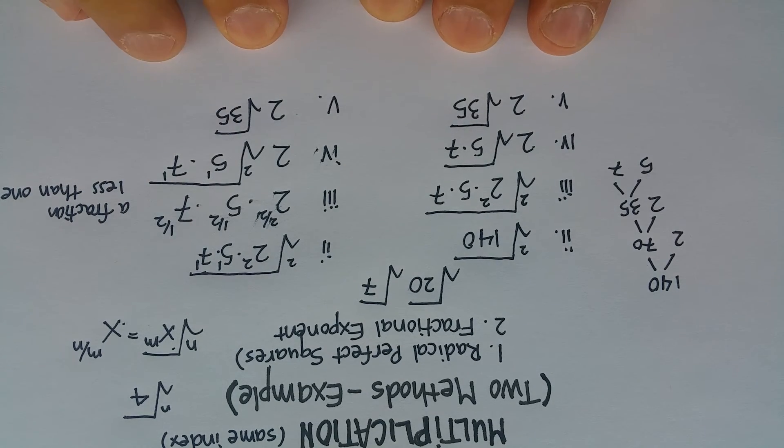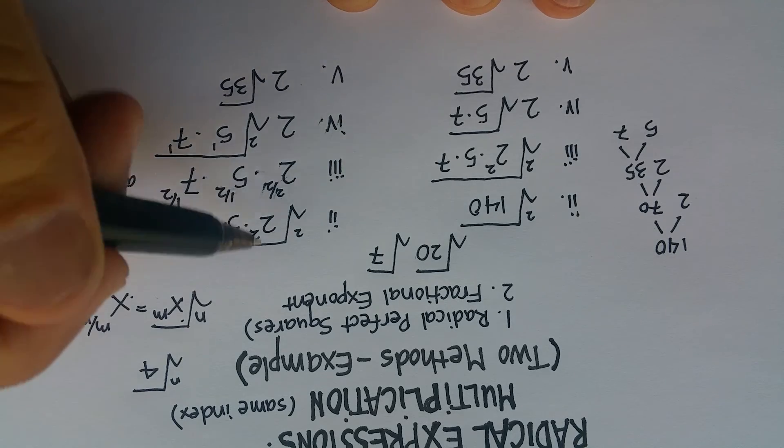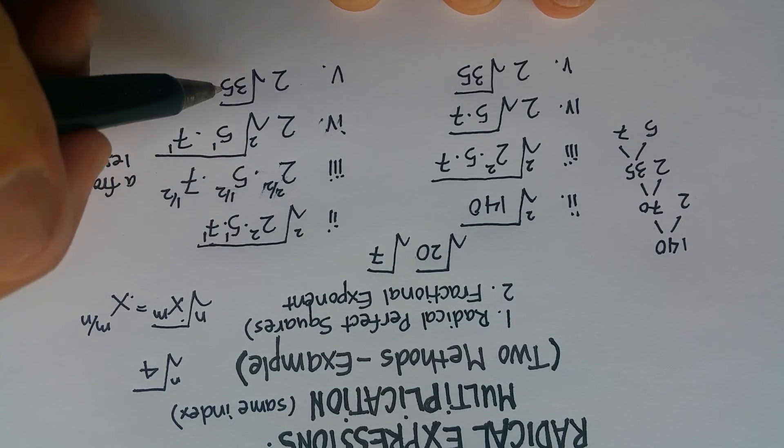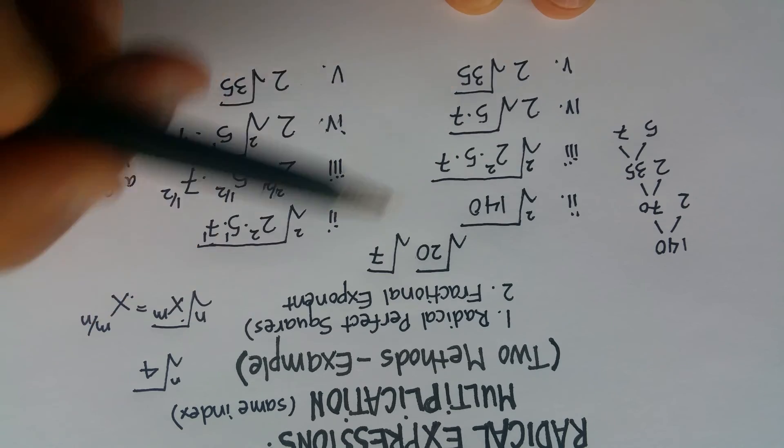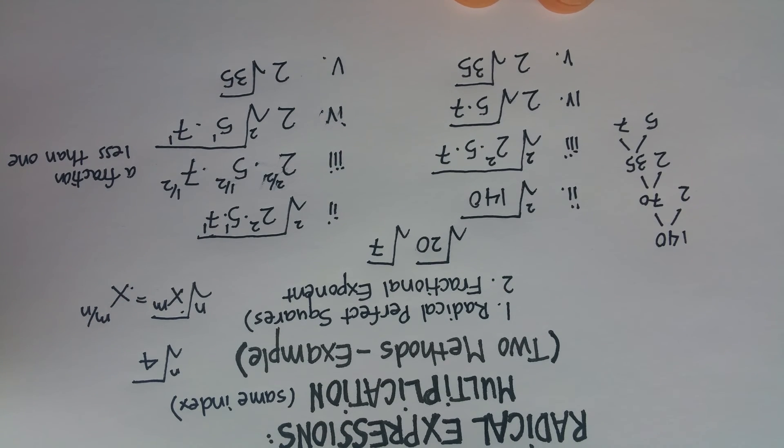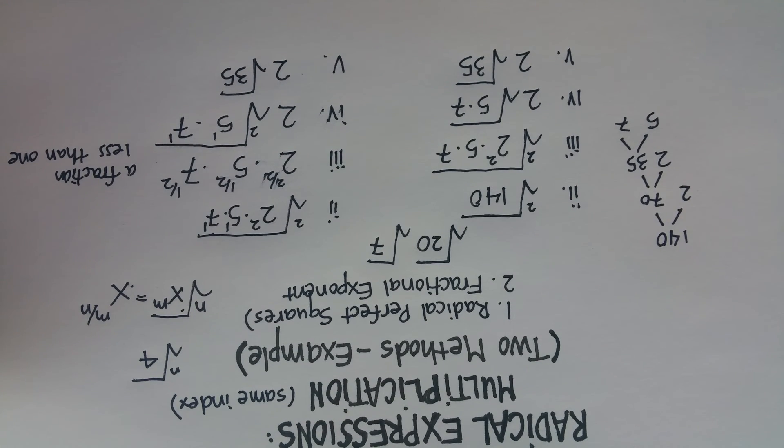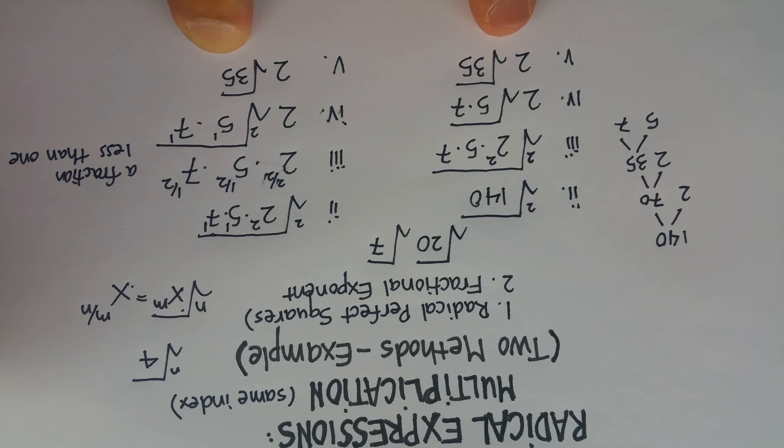So just two different methods to actually solve the same thing. Sometimes this fractional exponent method is easier. Sometimes these perfect square ones are easier. So if you want to learn both of them, you probably should learn both of them. The more ways you know how to do something, the more you tend to understand it. I hope that was helpful.